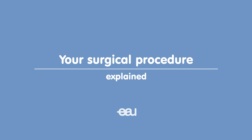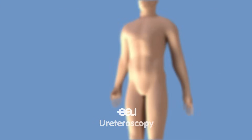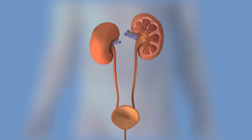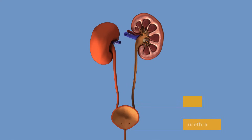Your doctor has recommended that you undergo a ureteroscopy. During this procedure, a ureteroscope with a tiny fiber optic camera is inserted through the urethra and bladder into the ureter or kidney. Ureteroscopy is used to remove kidney or ureteric stones and enables a direct view of the ureter and kidney to confirm or rule out other abnormalities.